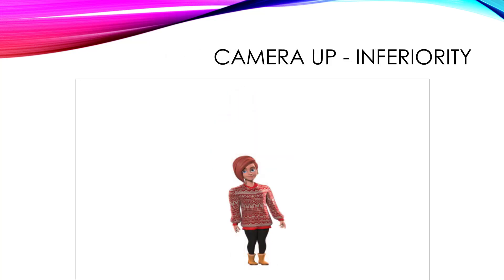The exact opposite is to look down at a character, and you can see in comparison Emma looks much more inferior than in the previous shot. So: center shot is neutral. Bottom shot — which you simulate by making the top of the character small and the bottom large — is superiority. And camera up, shooting down — which you simulate by making the top of the character large and the bottom small — is inferiority.